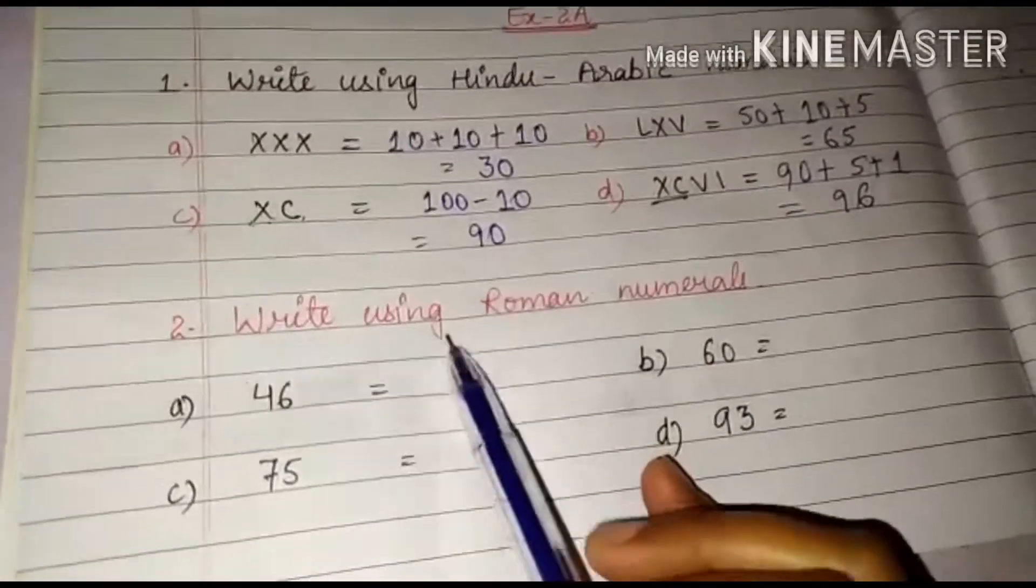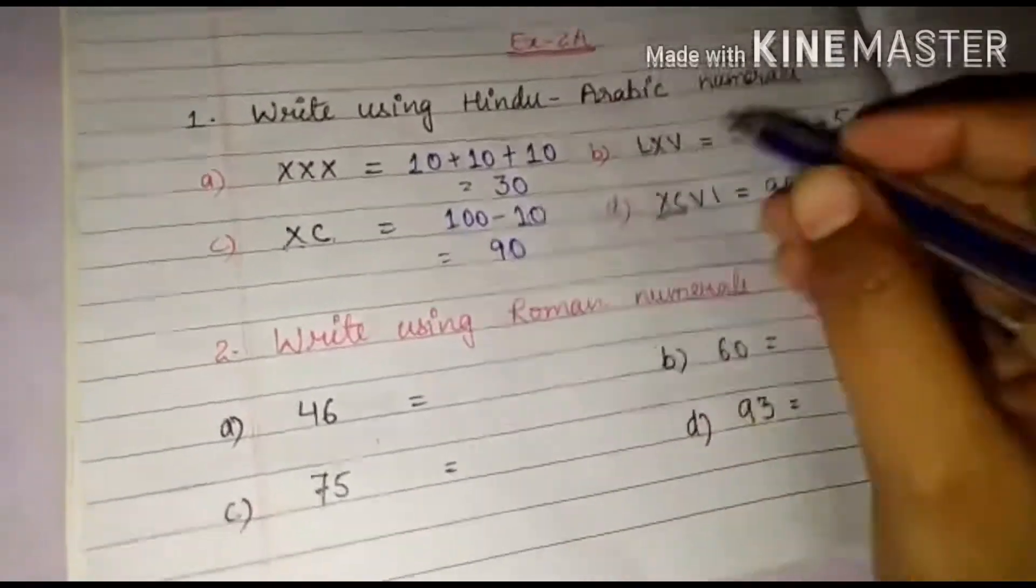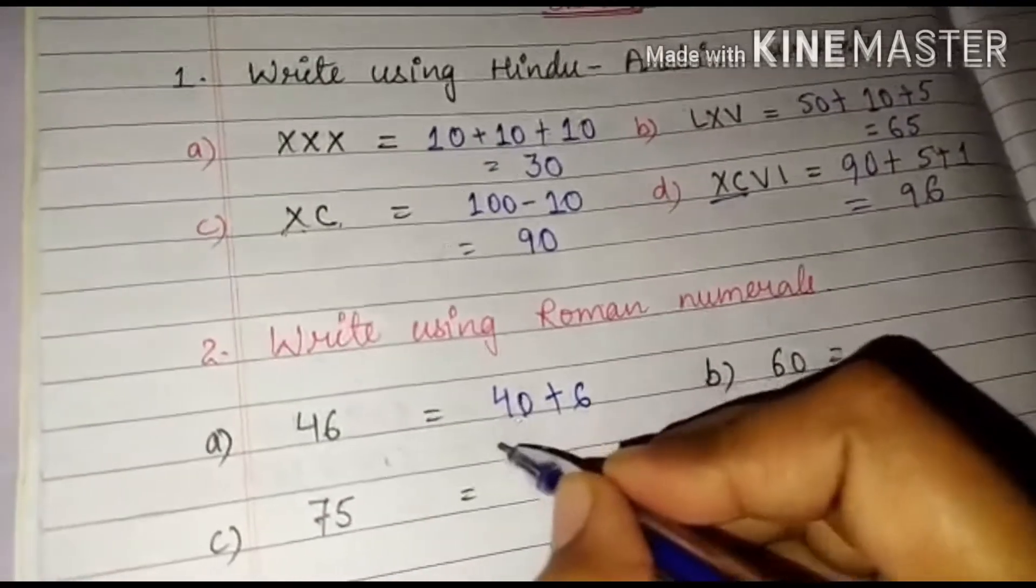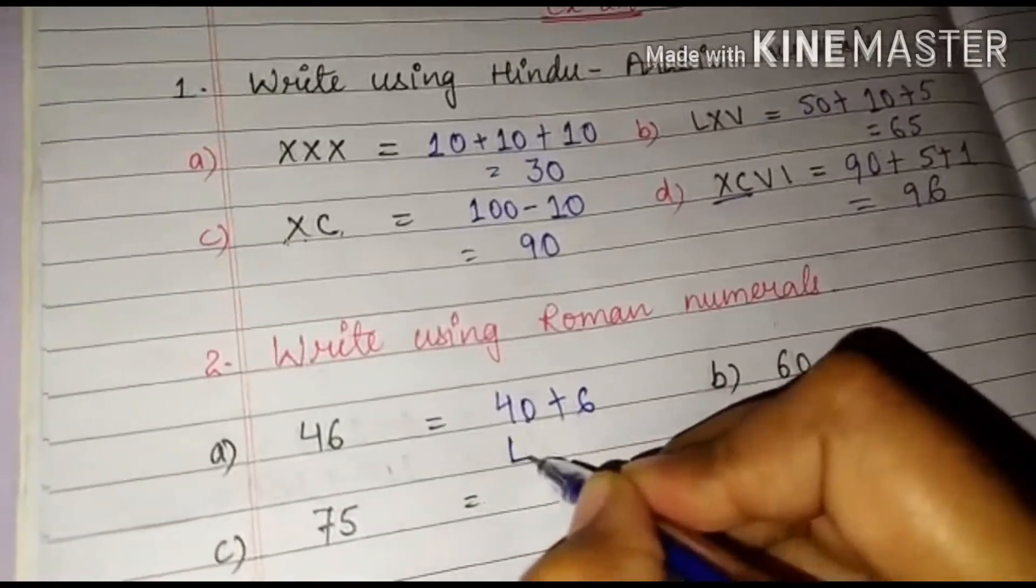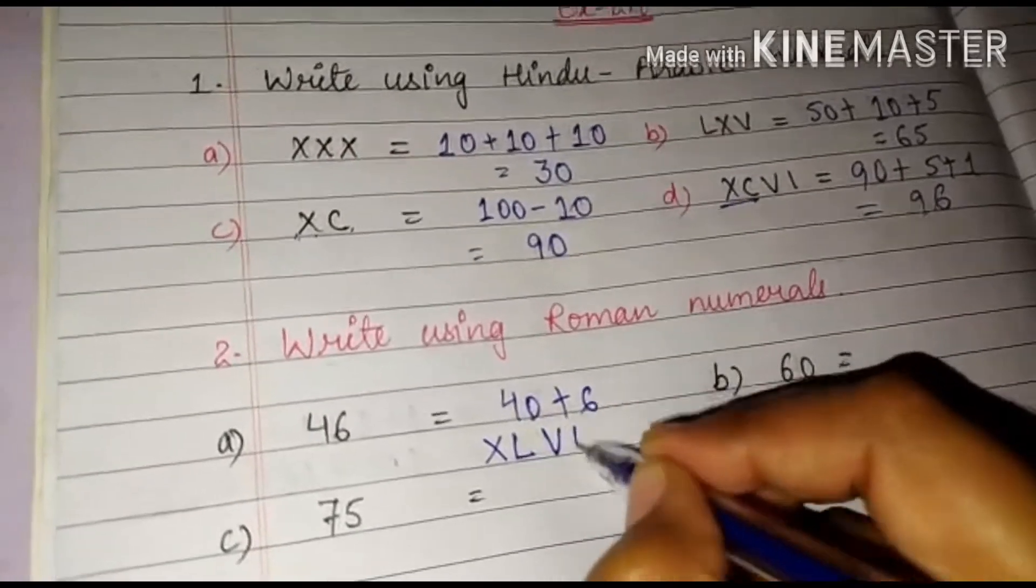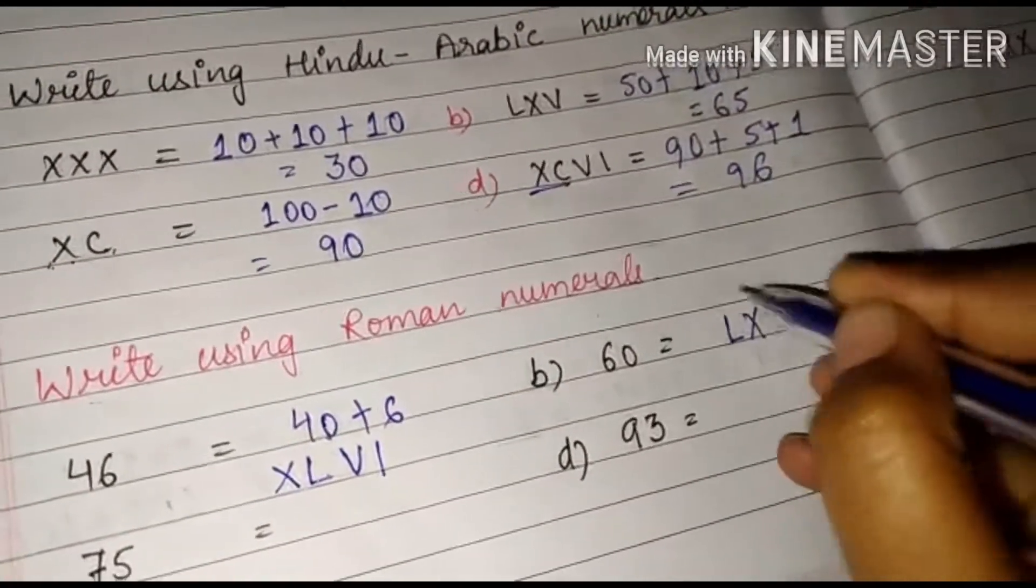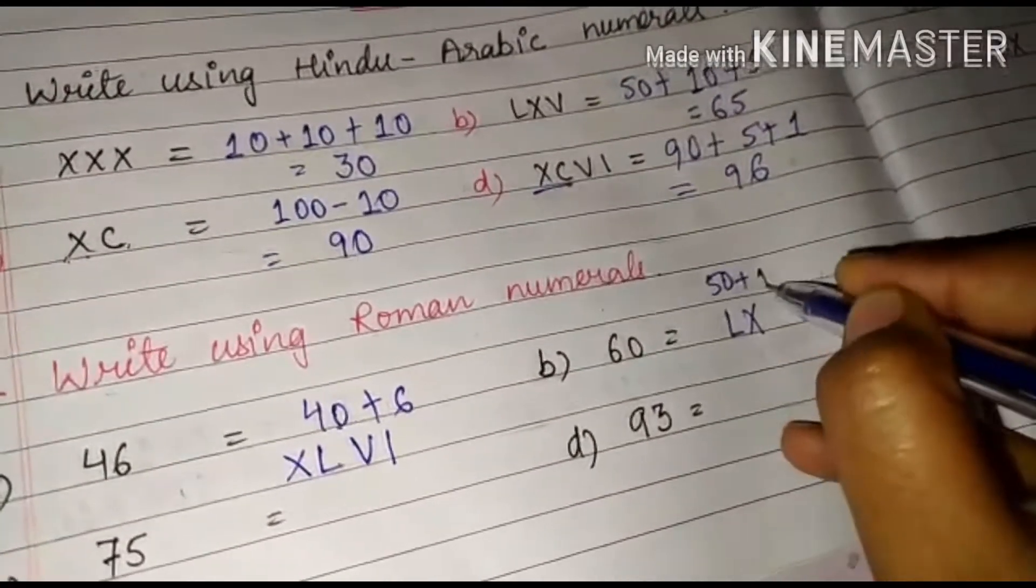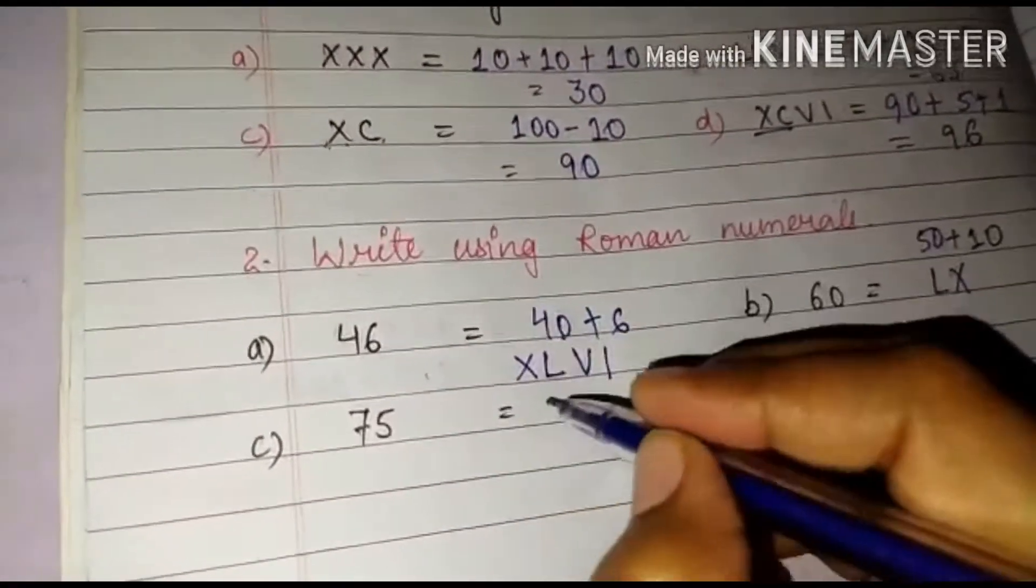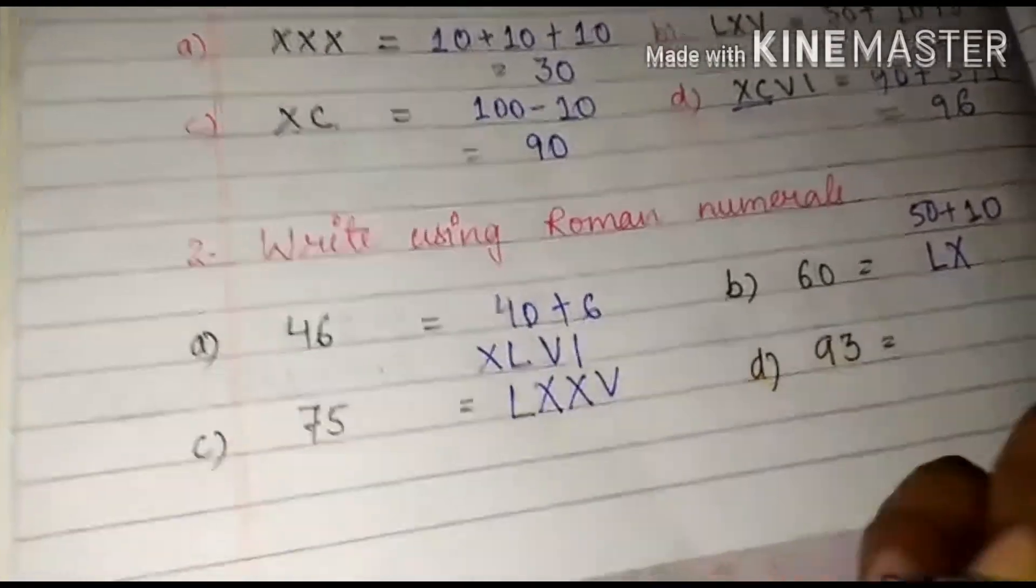Our next question is write using Roman numerals. So 46. First question is 46. So 46 is 40 plus 6. So what is 40? 40 should be 50 minus 10. So that is XL. And 6 is VI. So this is our 46. 60 is LX, which is 50 plus 10. 75. So 70 will be L is 50, 60, 75. And 93 will be 90 plus 3. And you know that 90 is our XC. 90 is our XC. So 90 will be XC. 3 is 1, 1, 1. That means three I's we have to write.